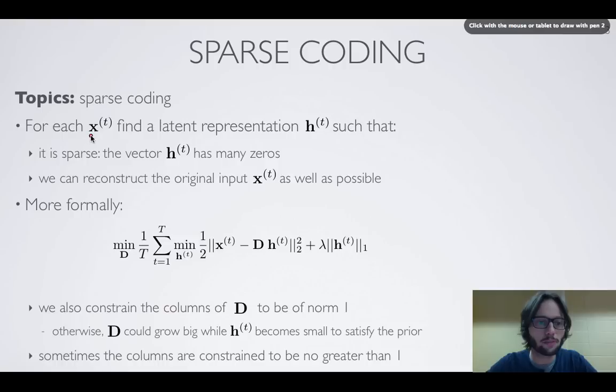The idea behind sparse coding is that for any input X, we want to find a latent representation, a hidden layer h(t), and we want a latent representation that is first sparse, which means that in the latent representation we want there to be many zeros and only a few non-zero elements.